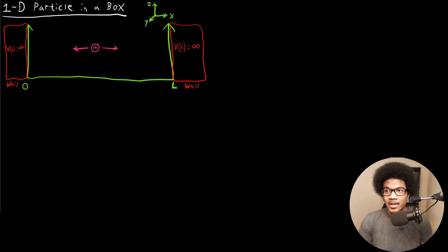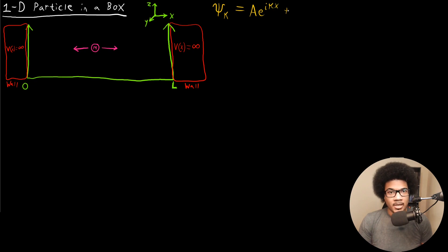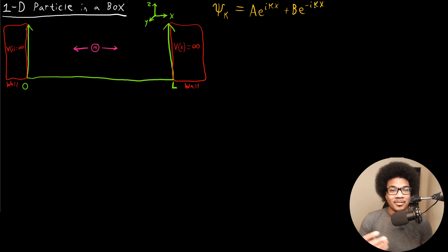So the free particle wave function, psi of k, is going to be A e to the ikx plus B e to the negative ikx. This is a superposition of two functions; A and B are coefficients for each function respectively. K can actually take on any value in the case of the free particle. We'll start with this wave function since we know that it behaves as a free particle inside the box.